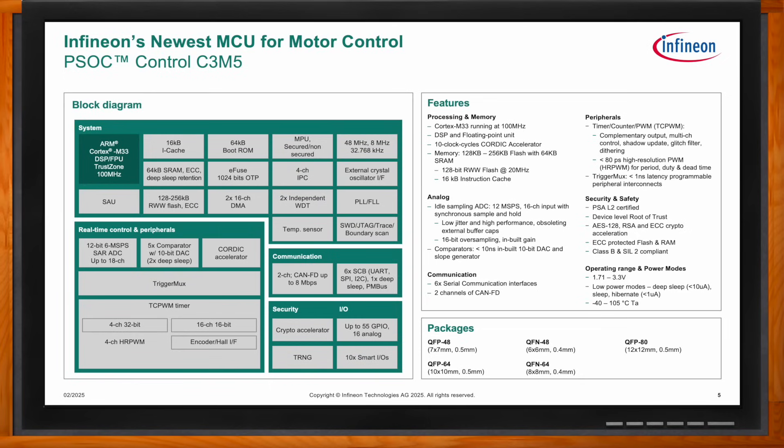A low-latency trigger multiplexing unit flexibly connects all peripherals so that real-time control is possible for critical motor control applications. Up to six channels of serial communications are provided, configured as UARTs, SPI, or I2C — with one available in deep sleep. Two channels of CAN FD are available with transfer speeds up to 8 megabits per second. To address security requirements, the PSoC Control C3 is Platform Security Architecture Level 2 certified and includes TrustZone for device-level root of trust.